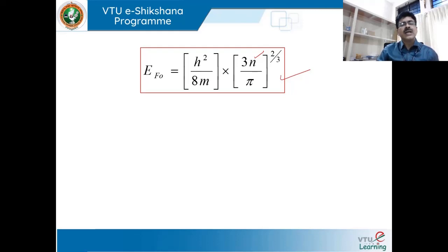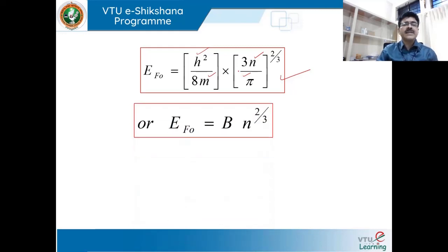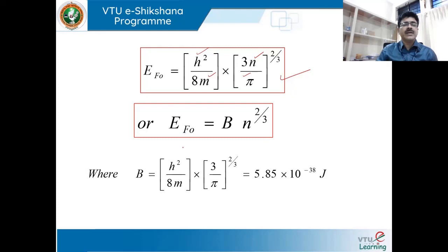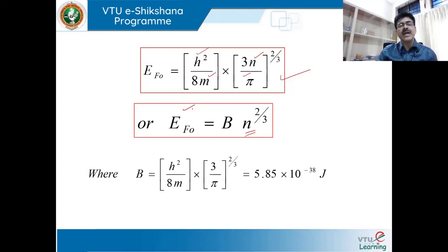This explains how the EF0 value differs for different materials — for example, copper has a different number of electrons than aluminium. EF0 simply depends on the number of electrons N, while h², m, and π are all constants. We can write EF0 = B × N^(2/3), where B = h²/(8m) × (3/π)^(2/3) is a constant equal to 5.85 × 10^-38 joules. Therefore, by knowing the total number of electrons per unit volume, we can calculate the Fermi energy of any material at absolute 0 Kelvin.